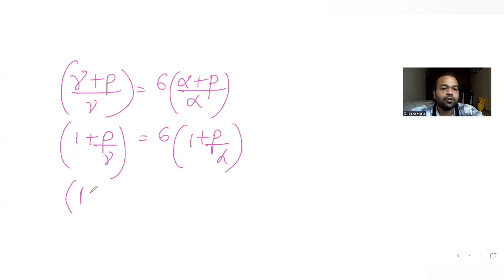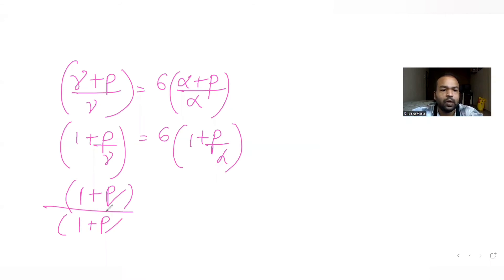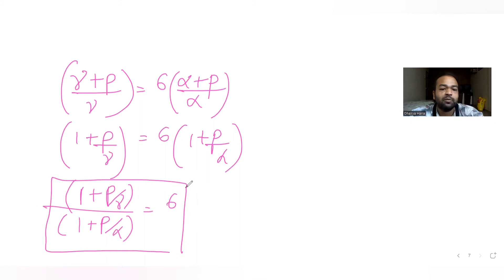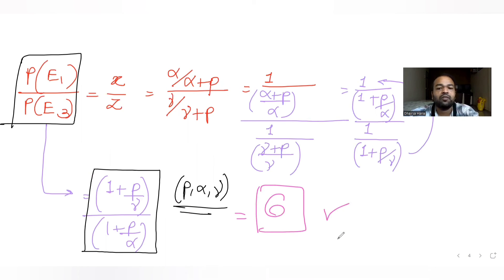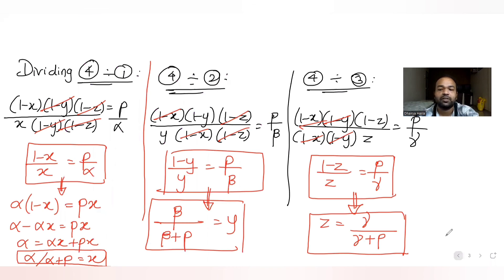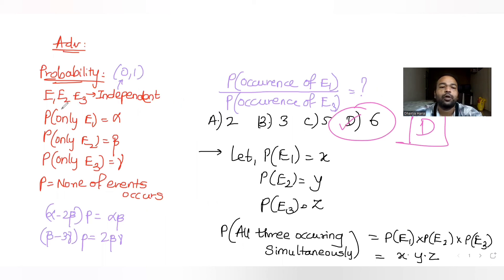Taking the ratio: (1 + p/gamma) / (1 + p/alpha) = 6. So the ratio P(E1)/P(E3) = x/z equals 6. The answer to the question is 6, and if you see the options, D is the correct answer.